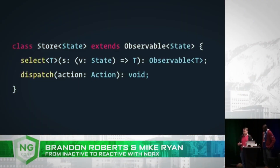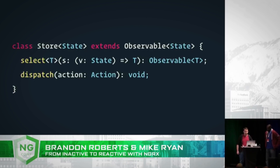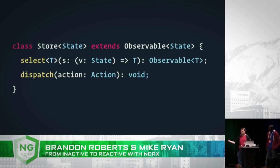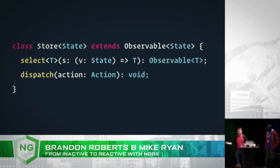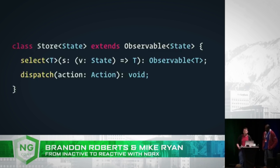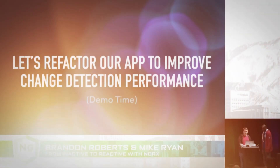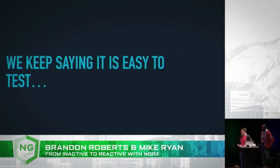We need to inject the store service into our components to bring it all together. The store is a special service — it's an observable of our application state. It has one special operator: the select operator. Because we have one large state object, components are only concerned with some small piece of it, so select takes a function that lets you select that part of state and returns an observable of only changes to that piece. It also has a dispatch method, which is how components dispatch actions to the store.